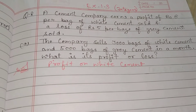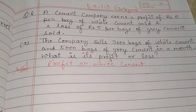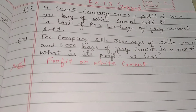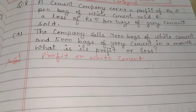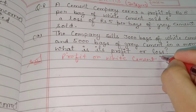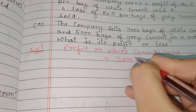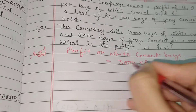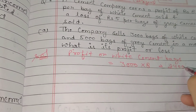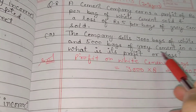The first part says the company sold 3,000 bags of white cement. At rupees 8 profit per bag, 3,000 multiplied by 8 gives a profit of rupees 24,000.